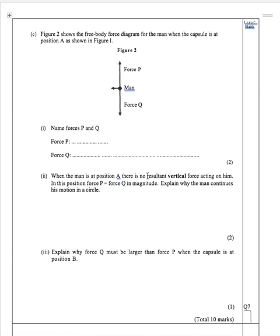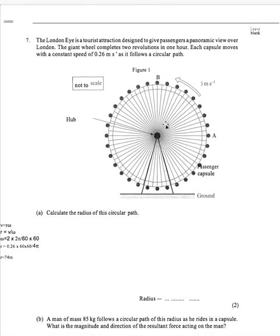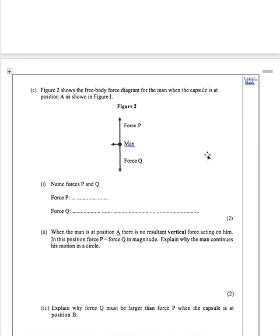Then here we have Figure 2 shows the free body force diagram for the man when the capsule is at position A. Let's have a look at where position A is. Position A is here. So looking at this, we're saying the centripetal force is to the left and we would have the weight of the man acting down. Let's look at the diagram. So we have a little arrow to the left, we have force Q down, and we have force P. Now force Q is clearly the weight of the man.